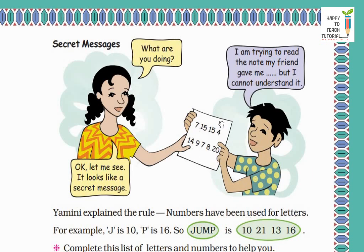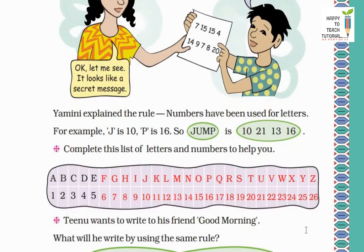For example, J is 10, P is 16. Where P should be written, number 16 is written. So JUMP, that means 10 for J, 21 for U, 13 for M, 16 for P, in this way. So how does this work? For this we need to give numbers to the A to Z alphabet. Let's do it.